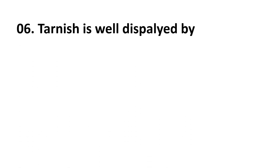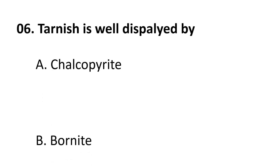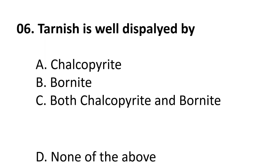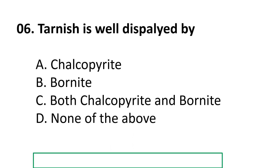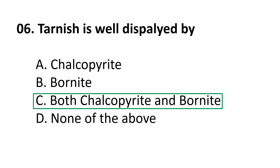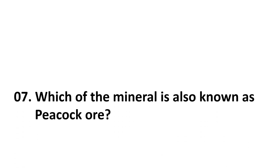Question 6: Tarnish is well displayed by — A. chalcopyrite, B. bornite, C. both chalcopyrite and bornite, D. none of the above. The answer is C, both chalcopyrite and bornite. Chalcopyrite is a copper iron sulfide, and bornite is also known as peacock ore; both minerals exhibit tarnish.